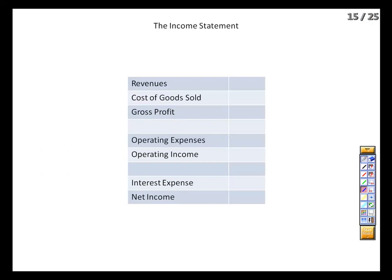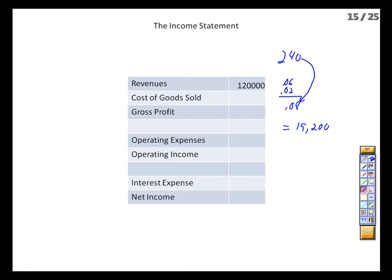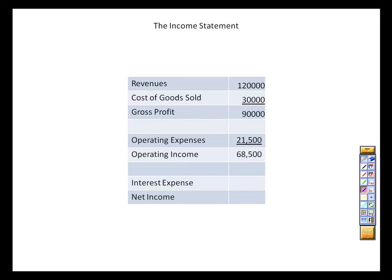We sold 240,000 units during the quarter at 50 cents each, giving $120,000 of revenue. Cost of goods is also based on those 240,000 units: each unit requires 6 cents of raw materials and 2 cents of overhead — 8 cents per unit total — giving $19,200. Adding labor at $9 per 200 units adds $10,800, totaling $30,000 in cost of goods sold. Gross profit is $90,000. Other expenses from the overhead budget — depreciation, sales salaries, and the like — total $21,500 for the quarter, giving operating income of $68,500. Subtract interest expense of $140, and net income is $68,360.